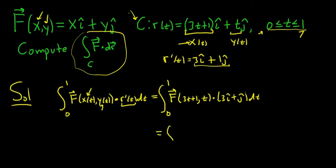Let's go ahead and evaluate this vector field at x and y. So this is going to be our x. So instead of x i hat it'll be 3t plus 1 i hat and then y is our t so plus t j hat. So I'm going to put a bracket here dot 3 i hat plus j hat dt.